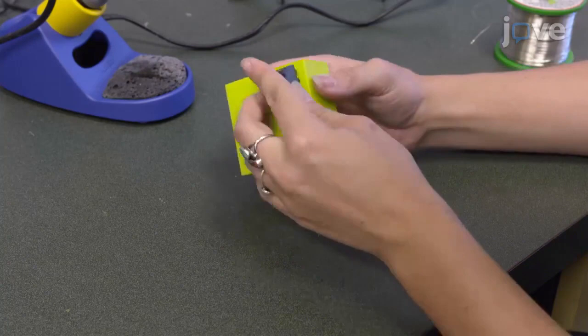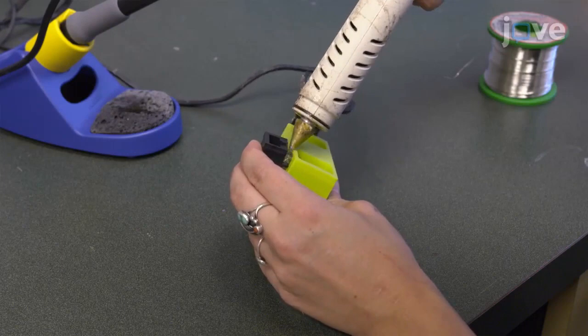Secure the RJ45 jack over the collector manifold access hole with hot glue, ensuring no bare wires are touching inside the manifold.